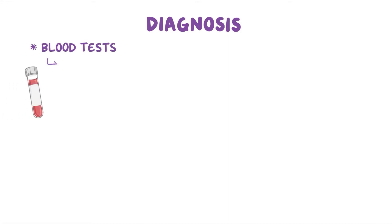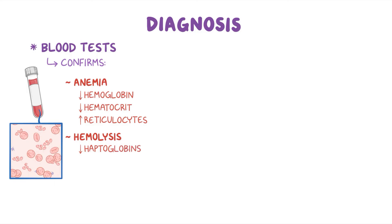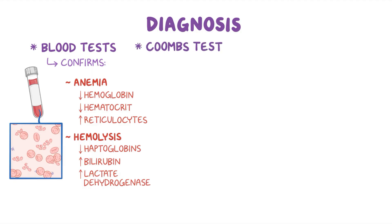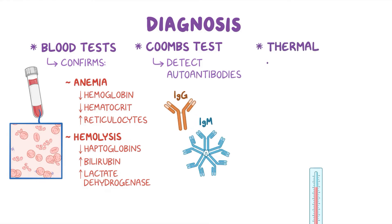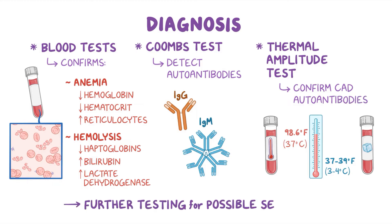Diagnosis of WAHA or CAD begins with blood tests to confirm anemia through low hemoglobin, low hematocrit, and elevated reticulocytes. Hemolysis is confirmed through low levels of haptoglobins and elevated levels of bilirubin and lactate dehydrogenase. Specialized testing, such as a Coombs test, detects the presence of WAHA or CAD-specific autoantibodies. A thermal amplitude test may confirm CAD autoantibodies. Further testing may be necessary to determine possible secondary causes.